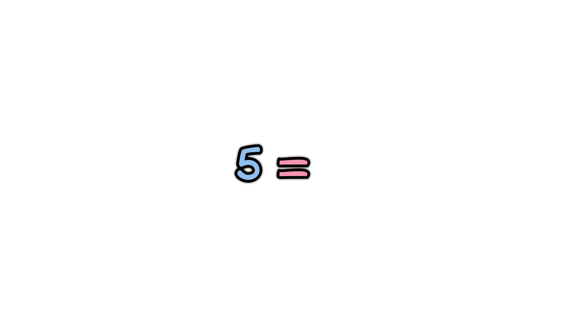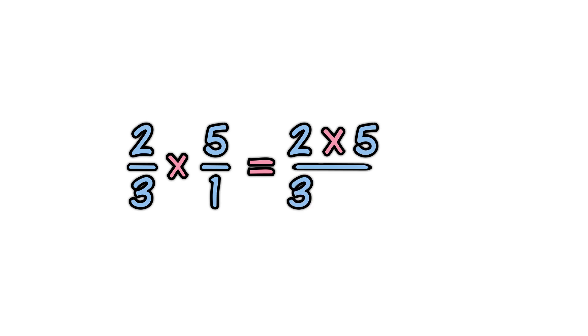5 is also 5 over 1. Then continue as before. 2 thirds times 5. Make 5 into 5 over 1. Now just proceed as normal. Multiply tops and bottoms. The fraction is already as simple as it can be. Answer is 10 thirds.